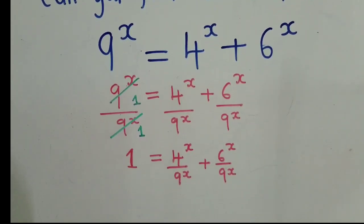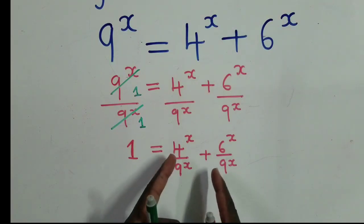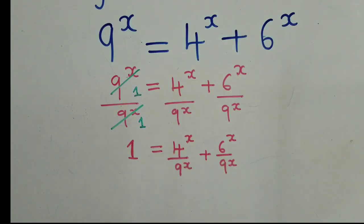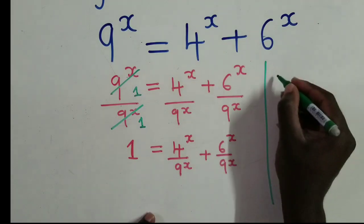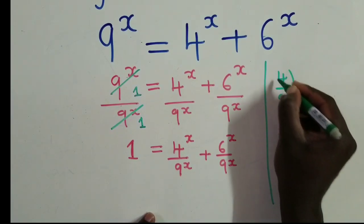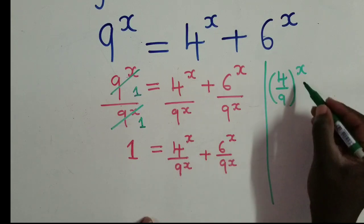The idea here is that I want to remain with a quadratic equation. To do that, I need to make sure that both terms have something in common. This one — 4^x over 9^x — is the same as (4/9)^x, because the power x can come up here.